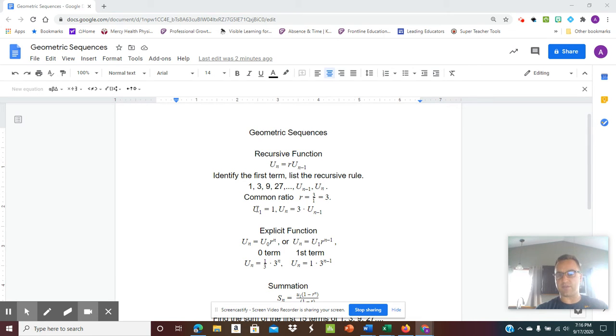Now, to list the recursive function, I list the first term. So u sub 1 is 1. And then u sub n equals 3 times u sub n minus 1. And this part just means the nth term is 3 times the n minus 1 term or the term before it.